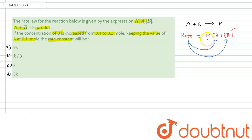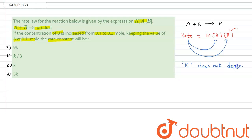The rate constant K does not depend upon the concentration of A and B. The rate constant K does not depend on concentration of A and concentration of B.